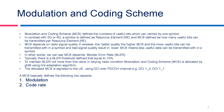MCS basically defines two properties: the first property is modulation, and the second property is code rate. Let's discuss about modulation and code rate in the next slide.